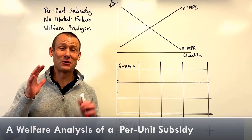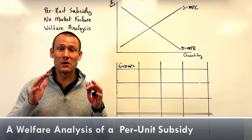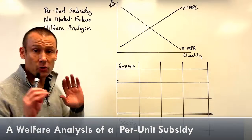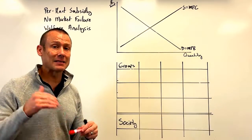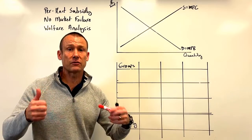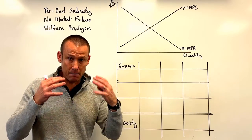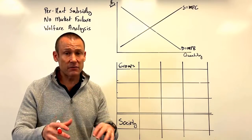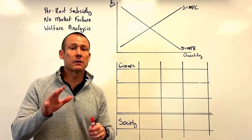We're going to try to get through a difficult graph in record time. Here's what we're doing: a per unit subsidy with no market failure. That means the market left alone achieves allocative efficiency and maximum social surplus. We've got a market with no externalities — it's a competitive market with no other market failures.